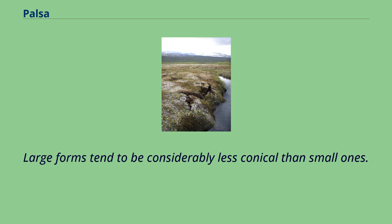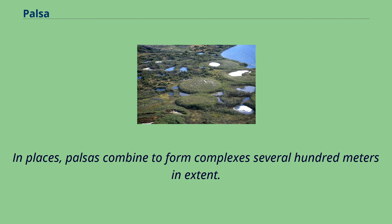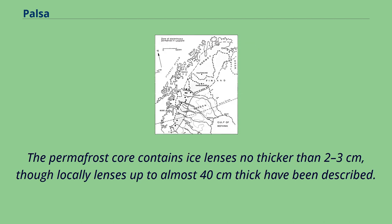Large forms tend to be considerably less conical than small ones. In places, palsas combine to form complexes several hundred meters in extent. The permafrost core contains ice lenses no thicker than 2 to 3 centimeters, though locally lenses up to almost 40 centimeters thick have been described.